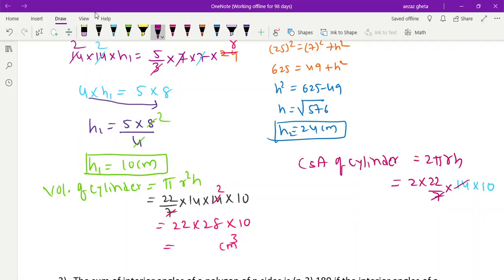44 × 2 × 10 = 880 cm². Correct. Everybody understood?